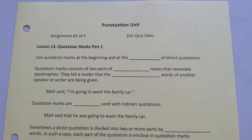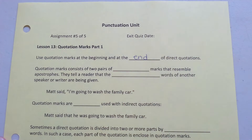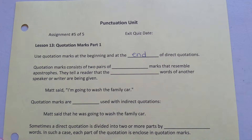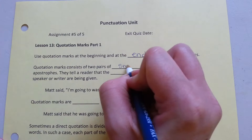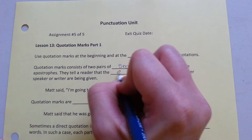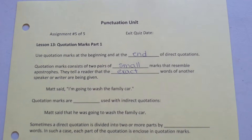Lesson 13: Quotation Marks, Part 1. Use a quotation mark at the beginning and at the end of a direct quotation. Quotation marks consist of two pairs of small marks that resemble apostrophes. They tell the reader that the exact words of another speaker or writer are being given. Matt said, "I'm going to wash the family car."